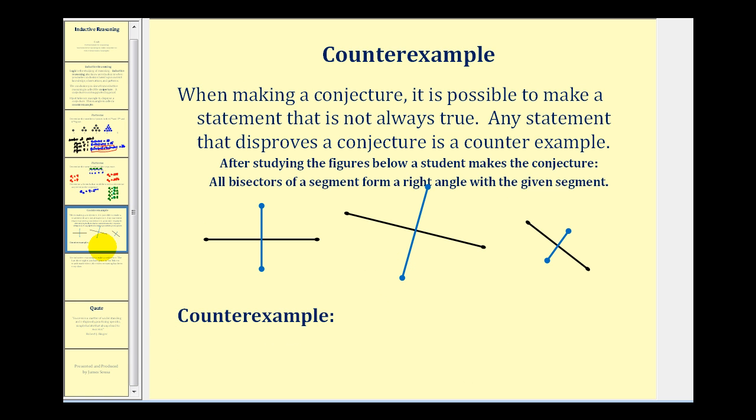Now let's talk about counterexamples. When making a conjecture, it is possible to make a statement that is not always true, and any statement that disproves a conjecture is a counterexample. Here's an example. After studying the figures below, a student makes a conjecture that all bisectors of a segment, pictured here in blue, form a right angle with the given segment.